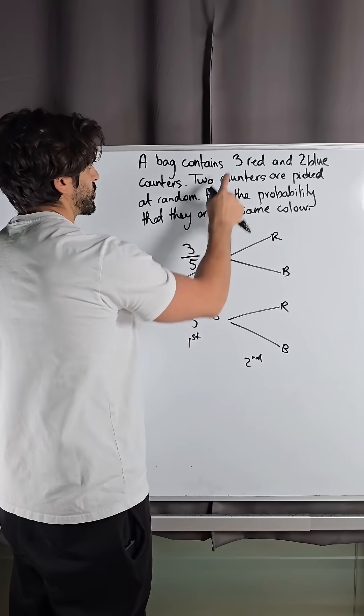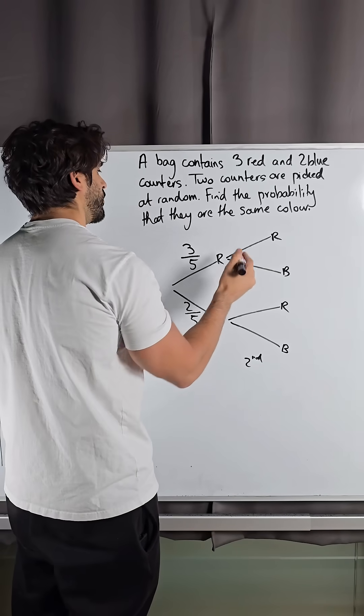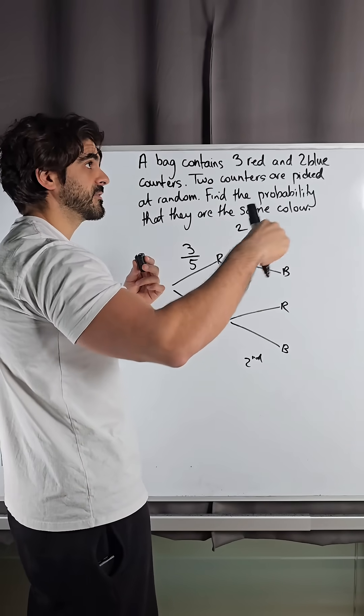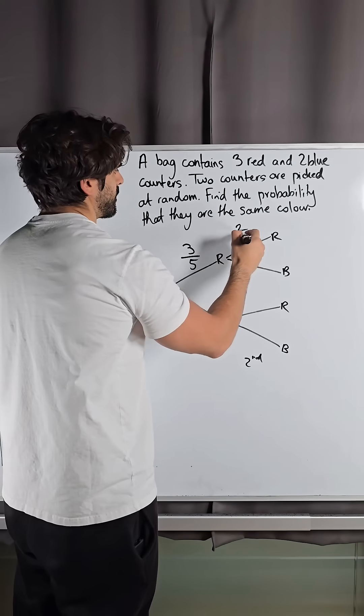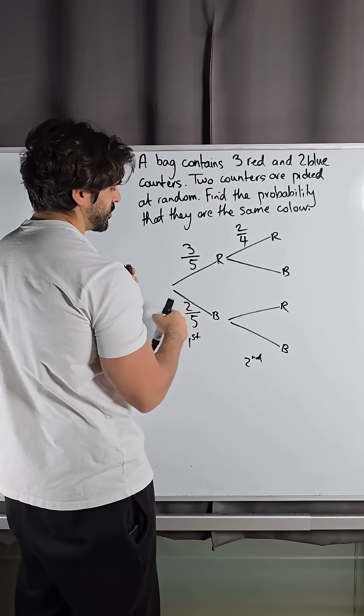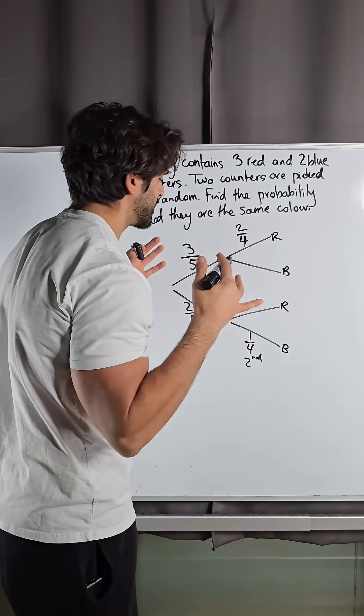If you take a red, there was three before, there'll be two left to take. But there'll also be one less left in total, so if there was five in the bag before and you took one out, there'll be four left. Same with here - if you had two blues and you took one out, there'll be one left out of four.